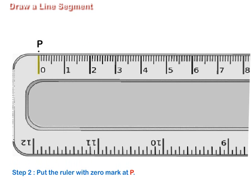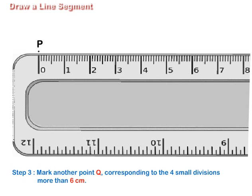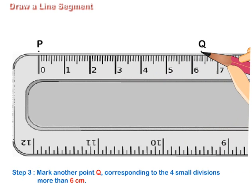Step 2: Put the ruler with 0 mark at P. Step 3: Mark another point Q corresponding to the 4 small divisions more than 6 cm.